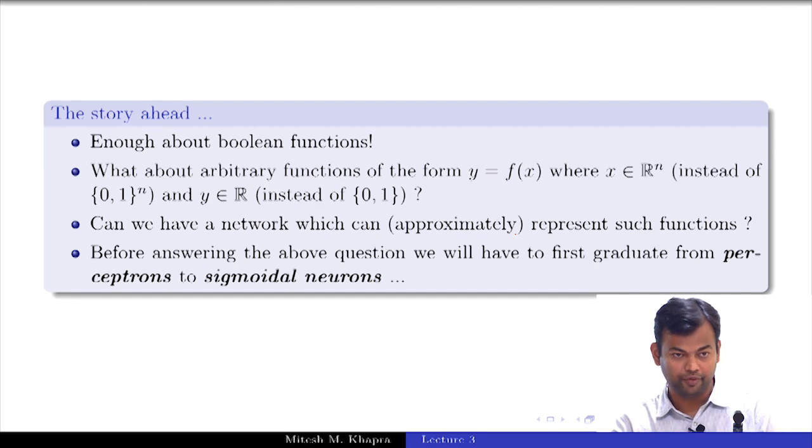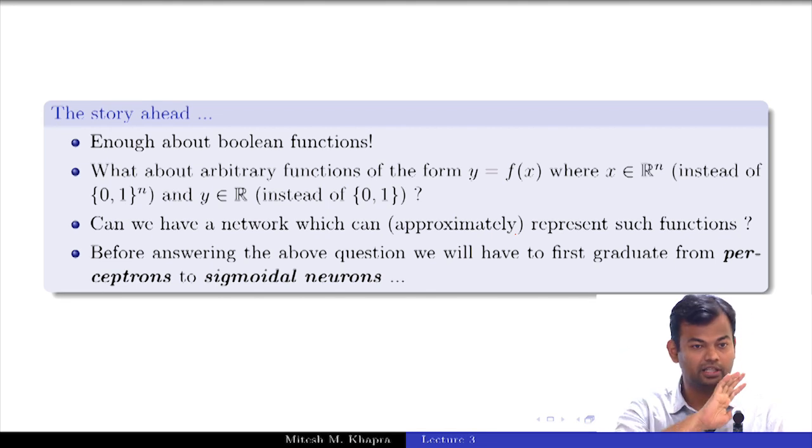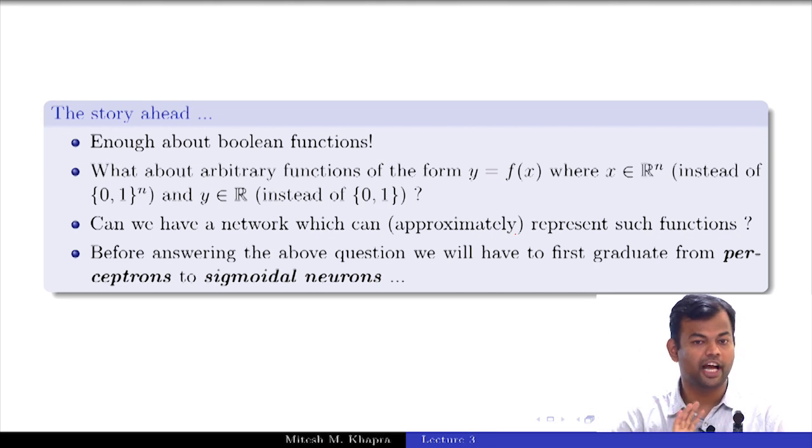Before we do this, before we come up with a network which can do this for arbitrary functions, we have to graduate from perceptrons to something known as sigmoid neurons. Please remember this overall context: we dealt with a lot of Boolean functions, analyzed them carefully and saw that we could come up with networks which could represent arbitrary Boolean functions exactly as long as we have one hidden layer. The catch was that hidden layer could grow exponentially. Now we want to graduate from Boolean to real functions. That is the story that we are looking for. Let us start.